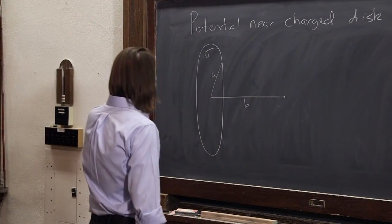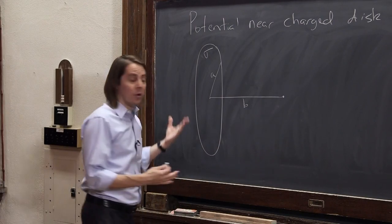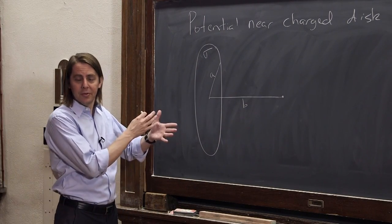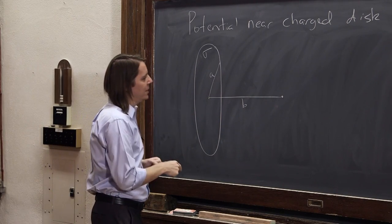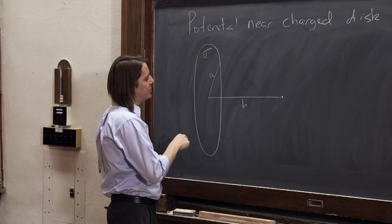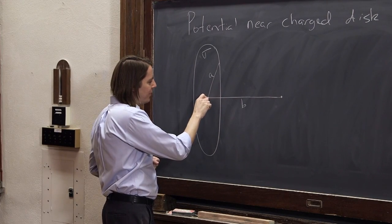So let's see, how do we do it? Well, since we don't have a formula for the potential of a disk, we do have the formula for the potential of a point charge, we break it up into a little piece of charge.